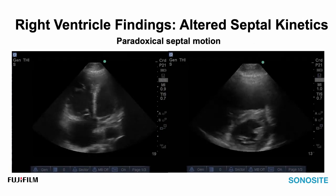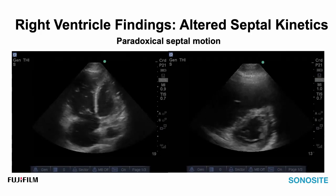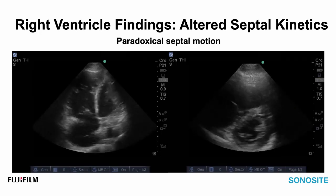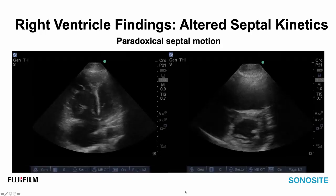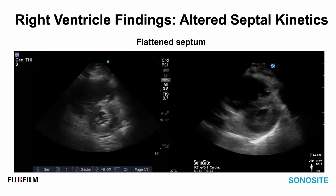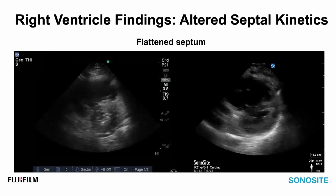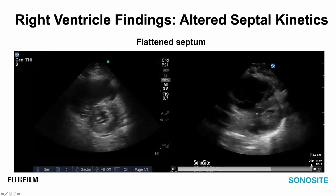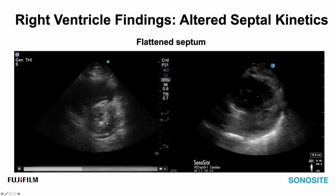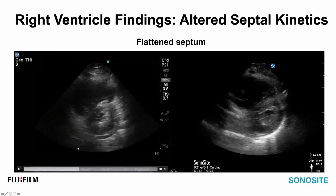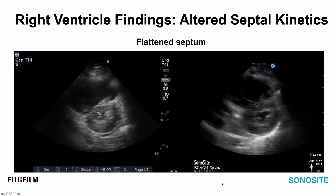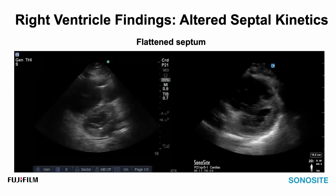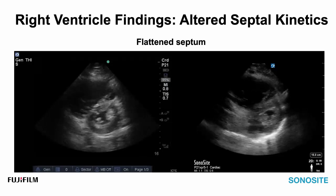With respect to the septum, the early phase of paradoxical septal motion is typically a systolic event — during right ventricular systole, increased pressure pushes the septum into the left ventricle. This can be seen on the apical four-chamber view and the parasternal short axis view. As this phenomenon increases with both volume and pressure overload to the right side, the septum may remain largely pushed towards the left ventricle in both phases of the cardiac cycle, leading to a flattened septum or D-shaped left ventricle. Altered septal kinetics are one of many features indicating that the right ventricle has failed.